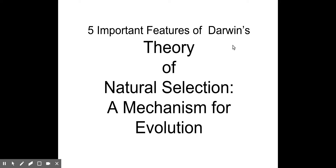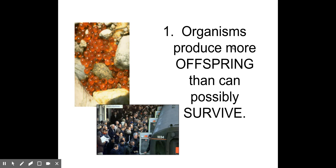In the end, Darwin came up with his explanation — his way to describe how organisms change over time — and he called it natural selection. The first principle related to natural selection is that organisms produce more offspring than can possibly survive.